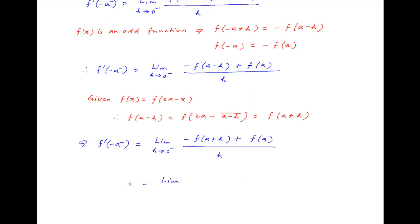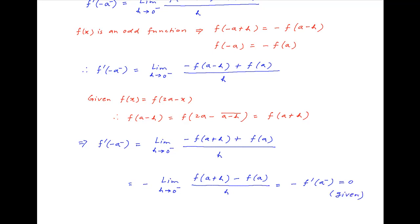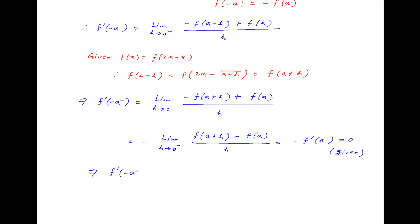This can be written as minus of the limit h tending to 0 from the negative side of f of a plus h minus f of a, divided by h. Notice that this equals minus of the left-hand derivative at x equal to a, which is equal to 0. It therefore follows that the left-hand derivative at x equal to minus a is equal to 0, which is the required answer.